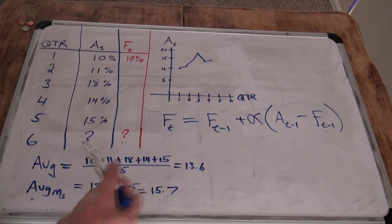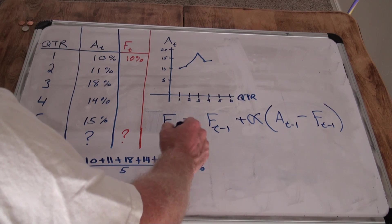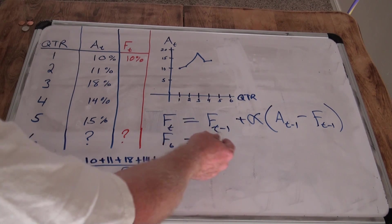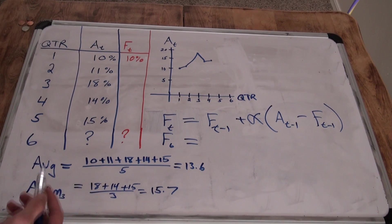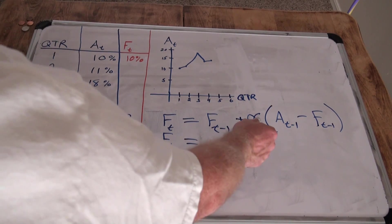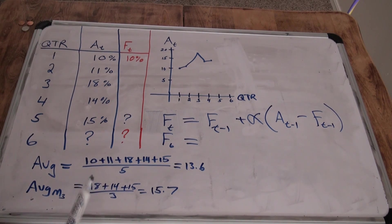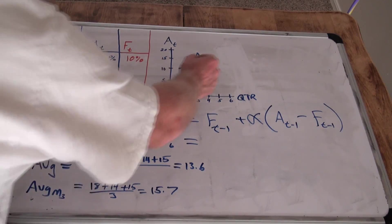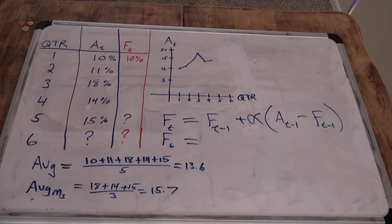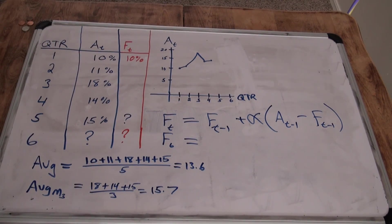And what that means is, to find the forecast for a certain period, we want period six. So we would do forecast of period six is equal to the t minus one, that means period five. What is the forecasted at five? We don't know. Plus the alpha, what is alpha? Alpha is a smoothing constant.